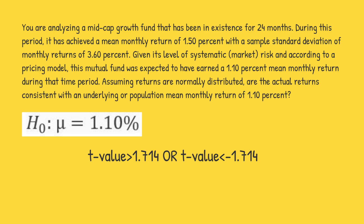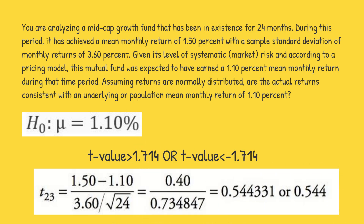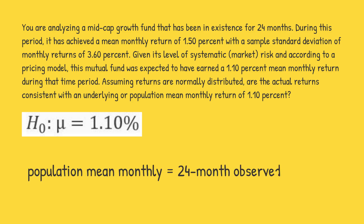Now let's calculate the t-test statistic. The t-value for 23 degrees of freedom equals the sample mean of 1.5% minus the null hypothesis value of 1.1%, divided by the standard deviation of 3.6% over the square root of 24. This gives us a t-value of 0.544. Since 0.544 is neither greater than 1.714 nor less than −1.714, we fail to reject the null hypothesis. Hence, at a 10% level of significance, we conclude that a population mean monthly return of 1.1% is consistent with the 24-month observed data.